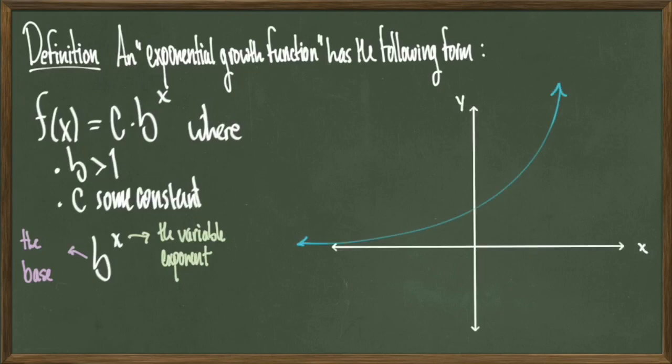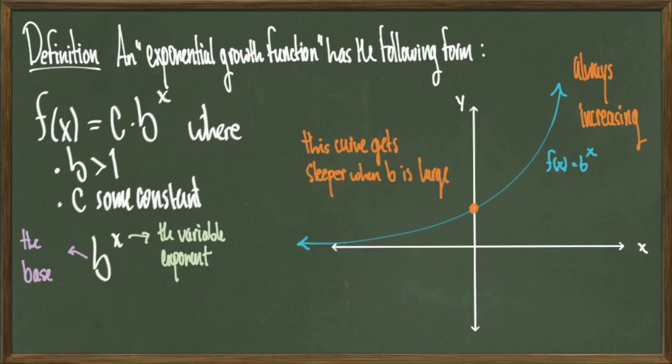In this case, when b is a number greater than 1, we have a curve looking like this. It's always increasing, and this curve gets steeper when b is large. Furthermore, as long as our constant b is a positive number, b^0 will always equal 1, so the point (0,c) will always be on our graph. Again, this is because b^0 = 1, therefore f(0) = c·1 = c.